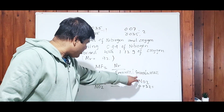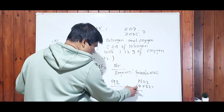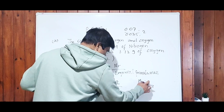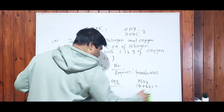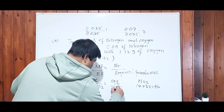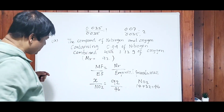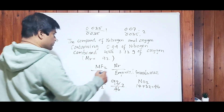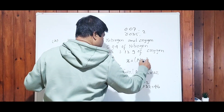Work out the empirical formula mass of NO₂: nitrogen is 14 and oxygen is 32, so empirical formula mass = 46. Then 92 divided by 46 equals 2. So x = NO₂ × 2, giving the molecular formula N₂O₄.